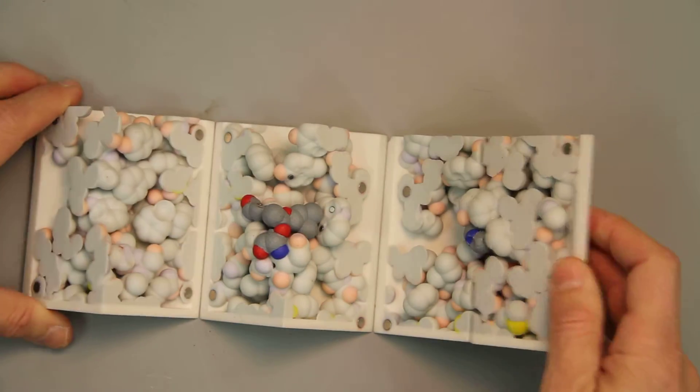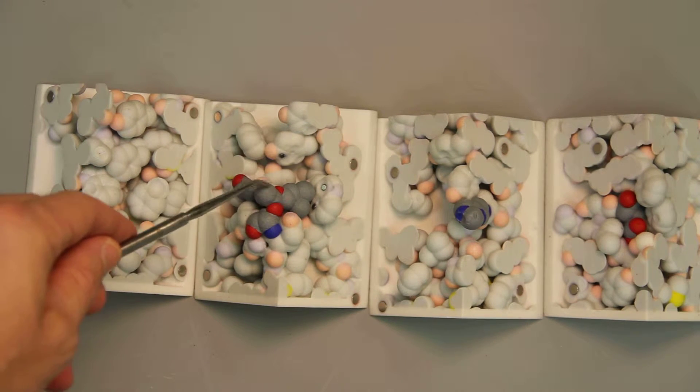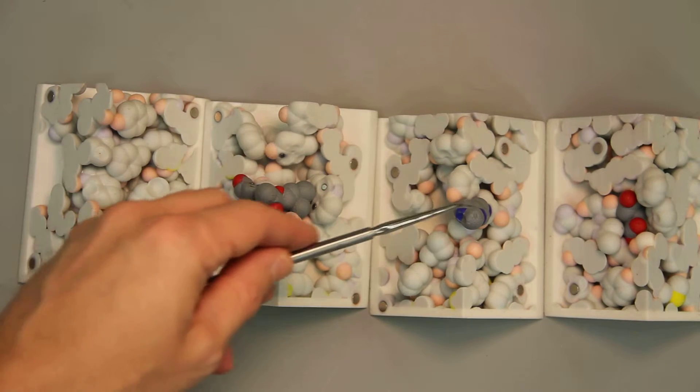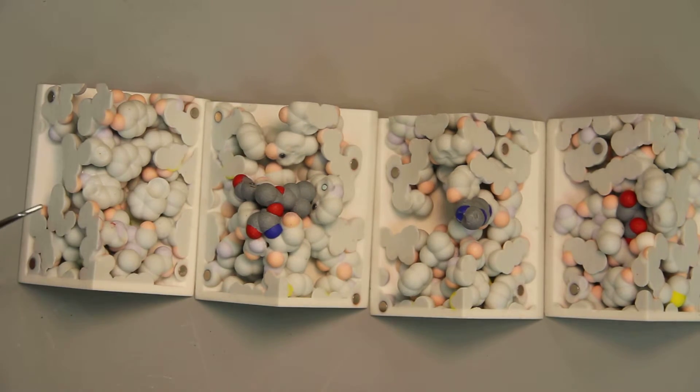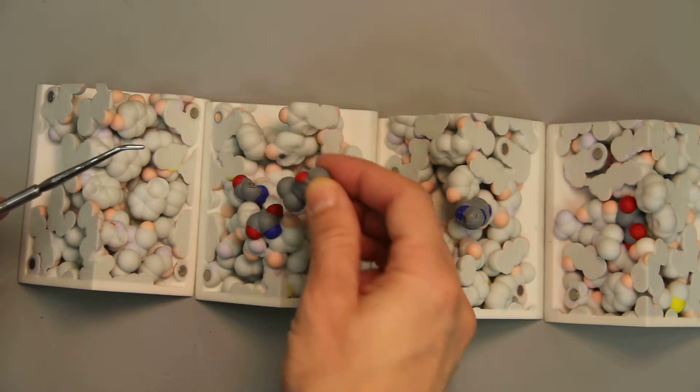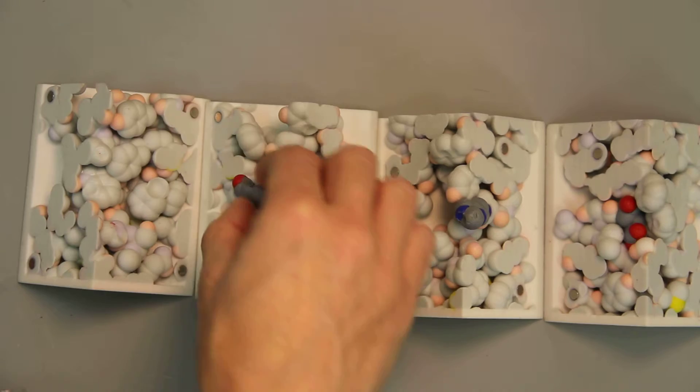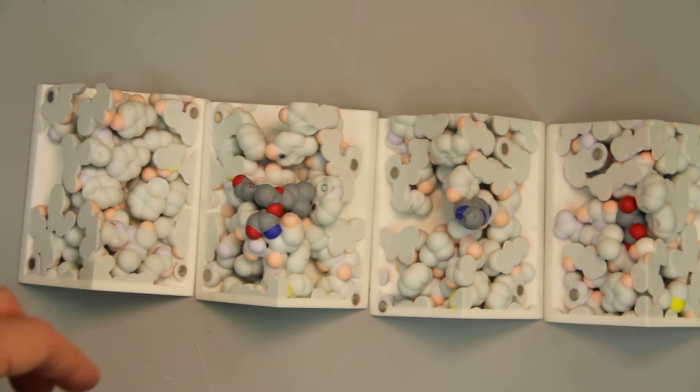Now, if we open it up again, you'll see the active site here and here. If we pull this out, this is acetylcholine. It attaches to the active site and it's broken down.